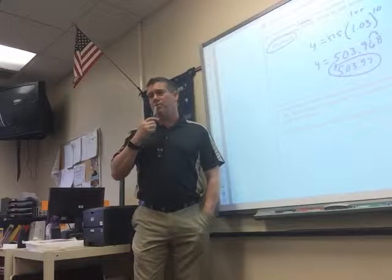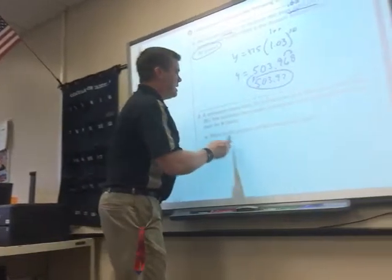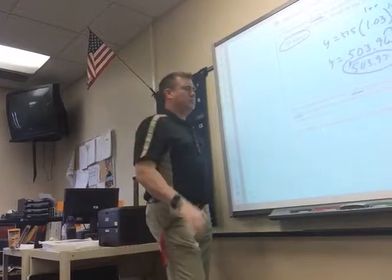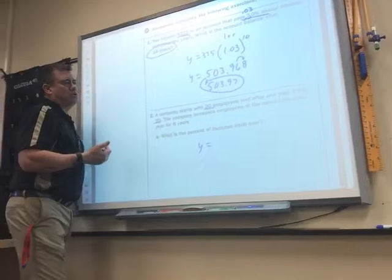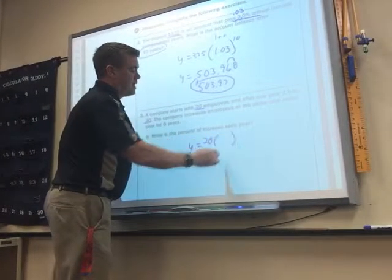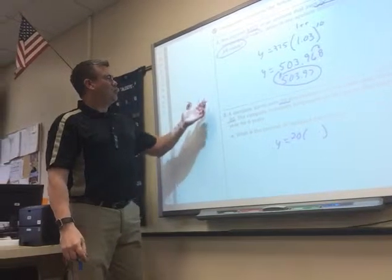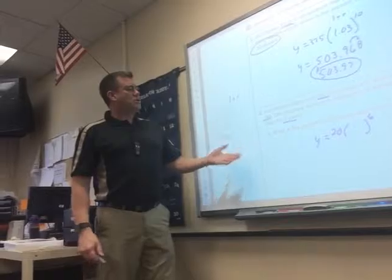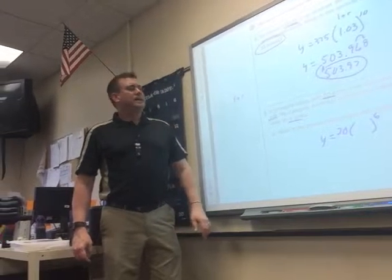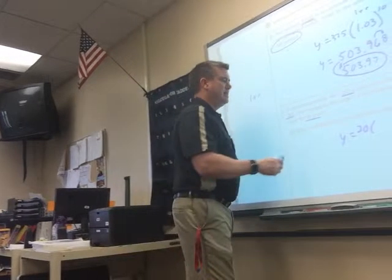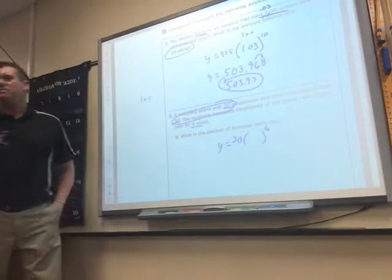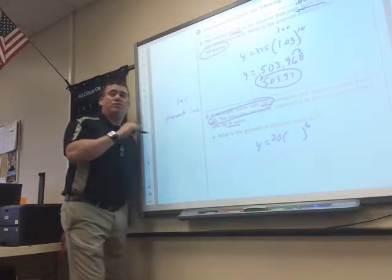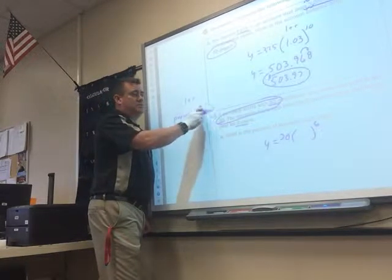So y equals the initial amount, 375, times 1 + the rate. The rate is 3%, which you got to remember to move the decimal, so that's 0.03. So what number goes in the parentheses? 1.03, raised to the 10. So they're really easy - the biggest mistake is people forget to move this decimal. So just put that in the calculator: 375 times 1.03 raised to the 10th. So it's $503.968, which you'd have to round that up to $503.97. This is also a formula that they use to figure out mortgages. You guys have all heard of a mortgage before?